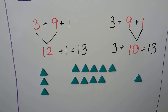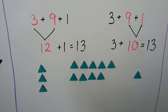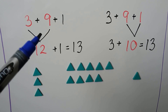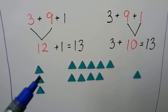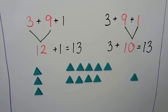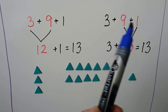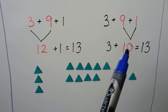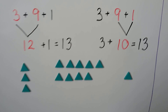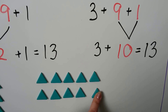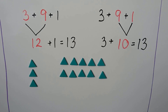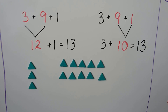If we want to add 3 plus 9 plus 1, we can add the 3 and the 9 together first. That's 12. Then we can add the 1. That's 13. Or we could add the 9 plus 1 first — that makes a 10. We can move this 1 over to the 9 to make a 10. Then we can add the 3. That makes 13. The sum is the same.